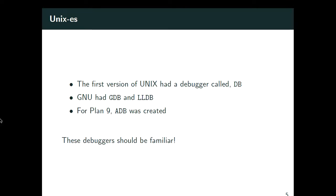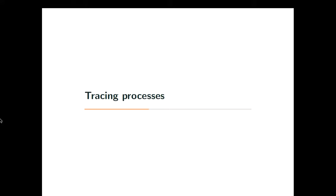Then came Unix, which we all love or hate — it had a debugger called db. GNU had GDB, which should be very familiar, and LLDB, which is nowadays mostly a macOS tool. Plan 9 had adb. They all look similar to GDB, which is what I use most of the time when I'm not printf debugging.